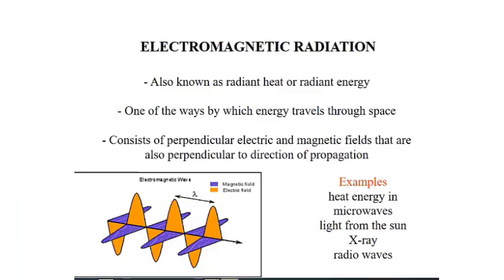Assalamu alaikum. Let's start with electromagnetic radiation. Electromagnetic radiation is also known as radiant energy or radiant heat, and this is one of the ways by which energy travels through space. We can say that the energy coming from the sun is an electromagnetic radiation, and it consists of perpendicular electric and magnetic fields.